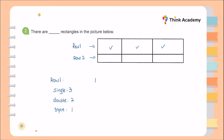Now let's look at row 2. In row 2, we again have 3 single rectangles. Two single rectangles next to each other can form a longer double rectangle, giving us 2 double rectangles. Three single rectangles together form one long triple rectangle, giving us 1 triple rectangle in row 2.